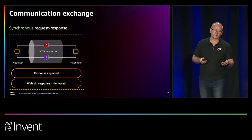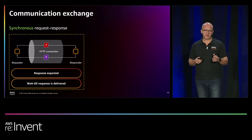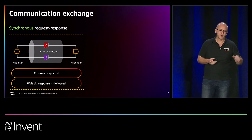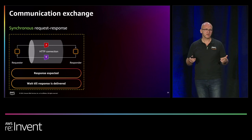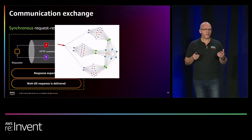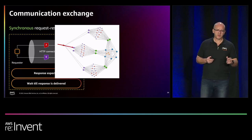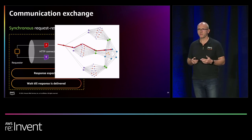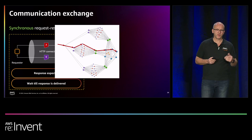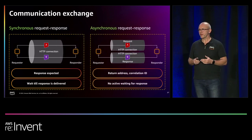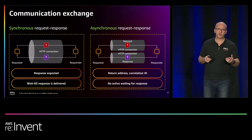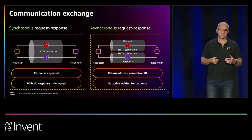In a synchronous request-response pattern, the requester sends a request, the responder works on it, and the response is sent back over the HTTP connection — binding resources on both ends while the request runs. Across a landscape of systems where several services are involved in processing a request, you bind resources on all those systems simultaneously. The next step is to exchange your synchronous API with an asynchronous one, which reduces the time resources are bound: the requester sends the request, gets an acknowledgment, and the responder works on it and sends the response back separately.